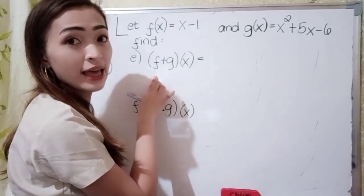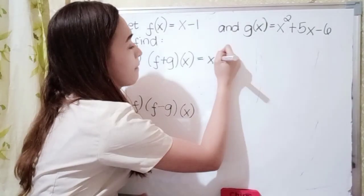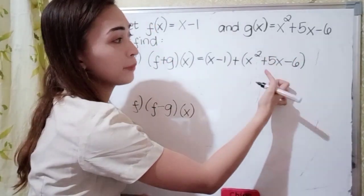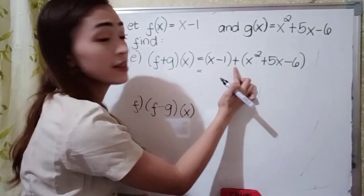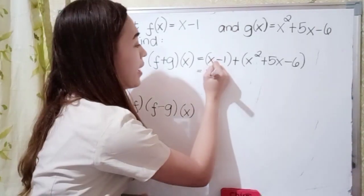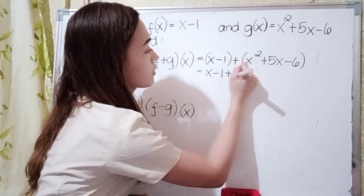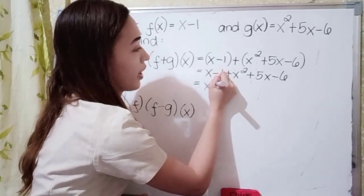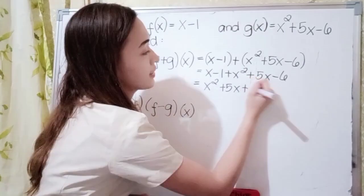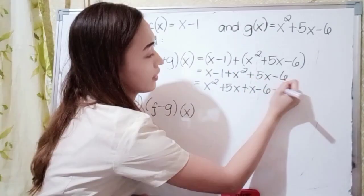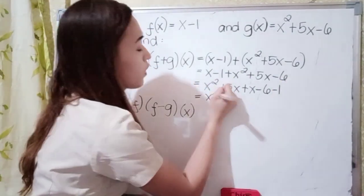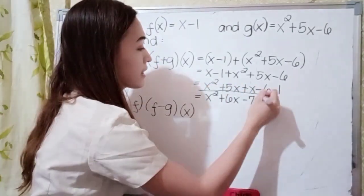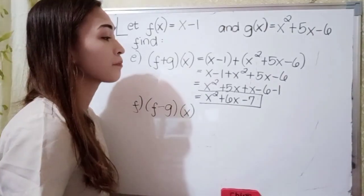Let's add our f of x and g of x. Our f of x is x plus 1, plus our g of x which is x squared plus 5x minus 6. Since this is addition, let's combine the similar terms: x squared, then 5x plus x, and then negative 6 minus 1. So x squared, 5x plus x is 6x, and negative 6 minus 1 is negative 7. The answer in letter e is x squared plus 6x minus 7.